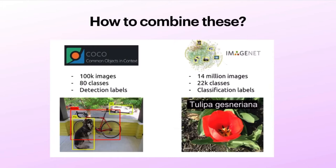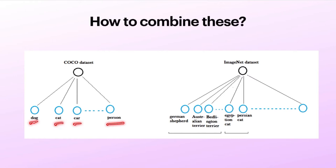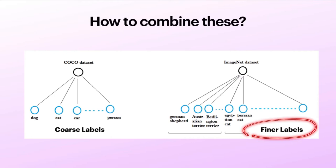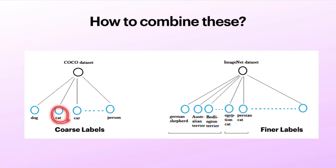Just think about it. COCO dataset has labels like cat, dog, car, person — these are very high-level categories. Whereas ImageNet has more fine-grained classes. For example, German Shepherd and Terrier are actually dog breeds, and Persian cat and Egyptian cat are varieties of cat. So ImageNet has finer labels whereas COCO has coarse labels. How can we combine these two? We know that these breeds still belong to the dog class, and these varieties still belong to the cat class. So if we can create some kind of hierarchy where these are subclasses of the main class, it forms a tree structure.